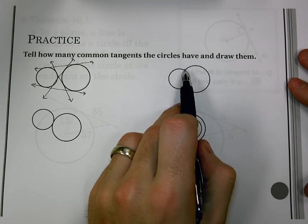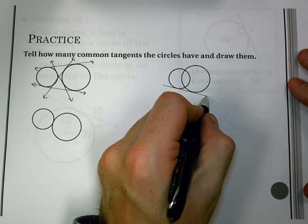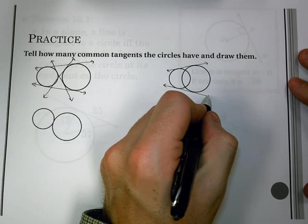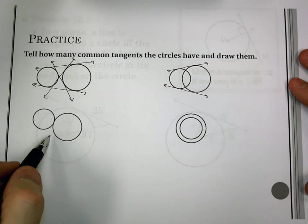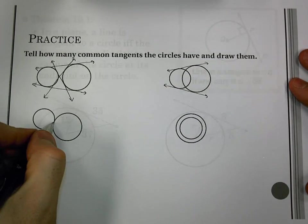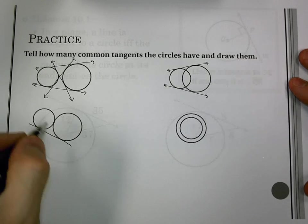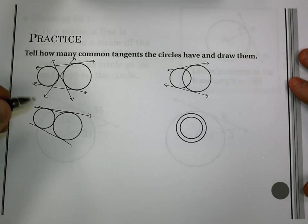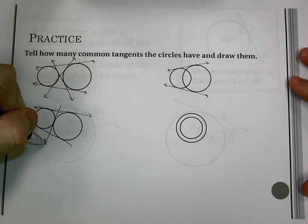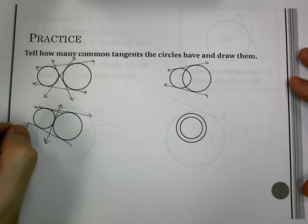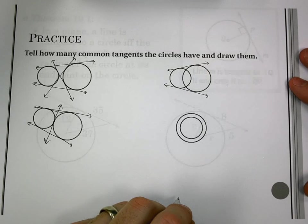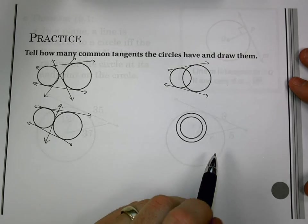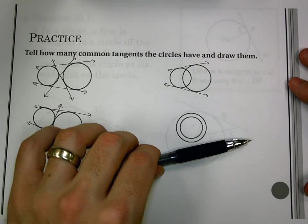When I have circles that share two points, I'm going to have two common tangents, a top and a bottom. And I'm also going to have one that's at that point they have in common. So that one has three. And when I have one circle inside another, I actually have no common tangents. Because if I think of the tangent,